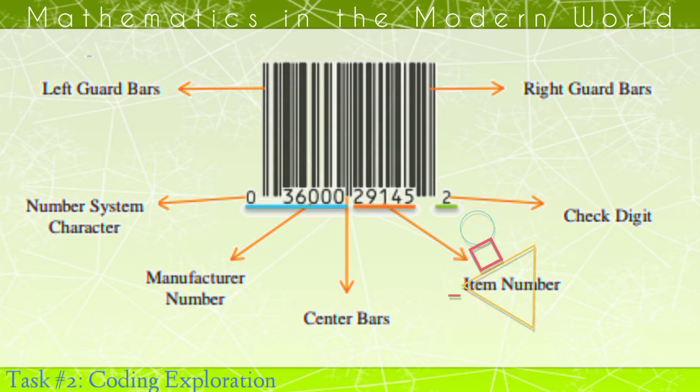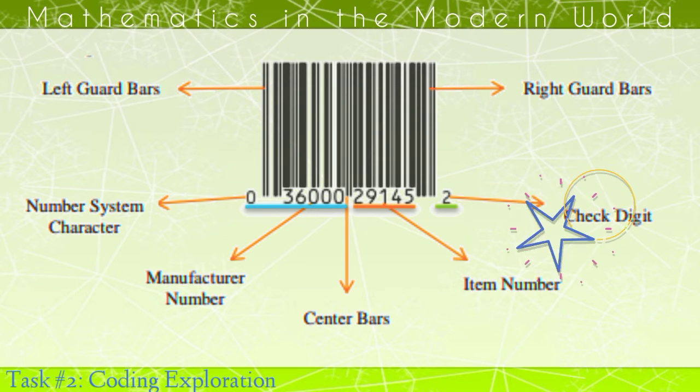Item number is the item reference assigned by the brand owner to reference a specific item. And last is check digit.